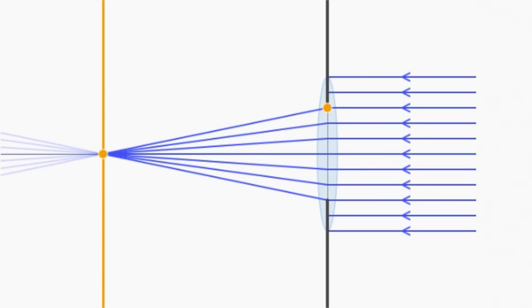This means that if our image plane is set at the focal length of our lens, then objects that are very far away appear sharp.